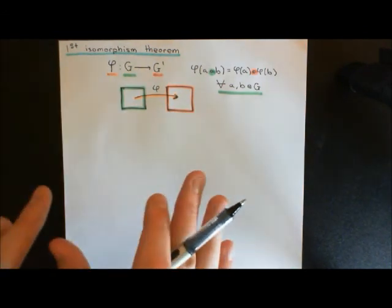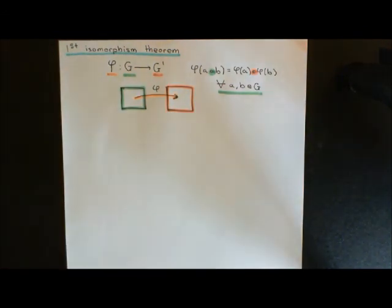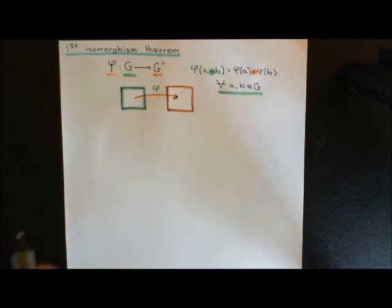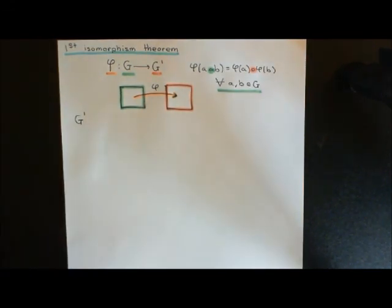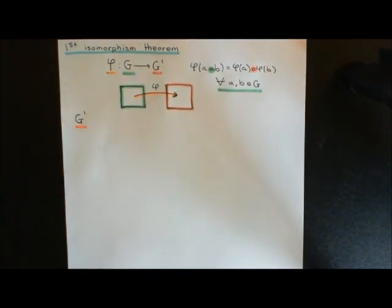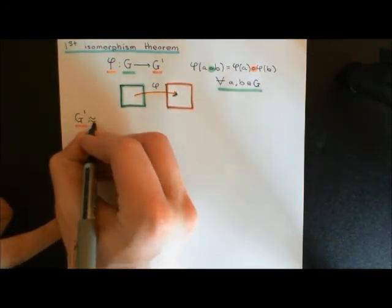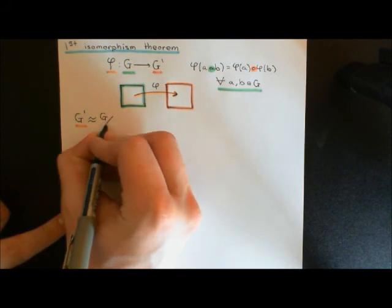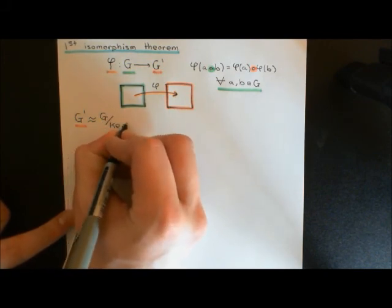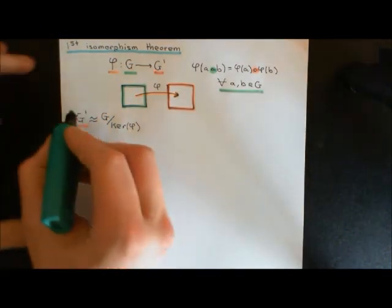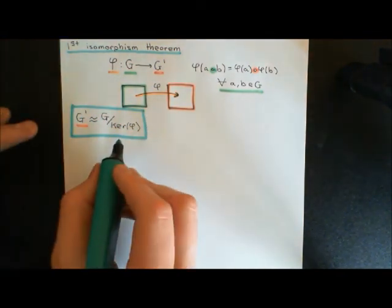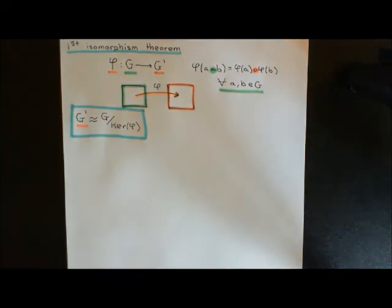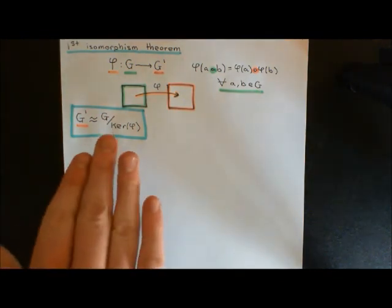So that's what a homomorphism is, and we're just going to be considering surjective homomorphisms. So let me now state the first isomorphism theorem. The first isomorphism theorem says that the codomain group G prime is going to be isomorphic to the quotient group of the domain group by the kernel of the homomorphism — so it's isomorphic to G modulo the kernel of phi.